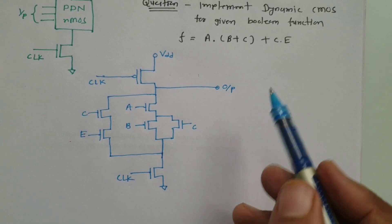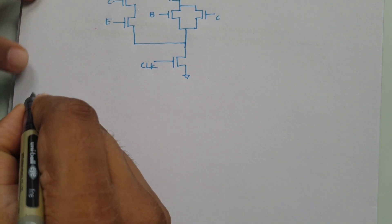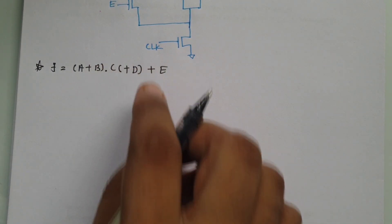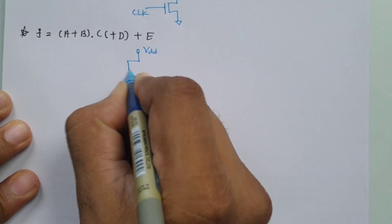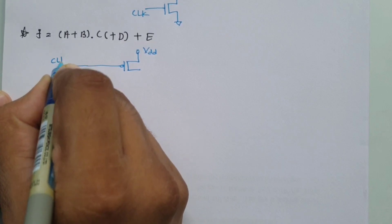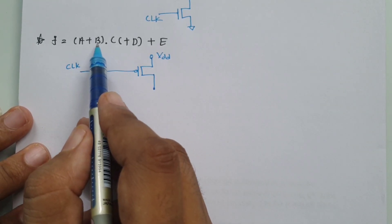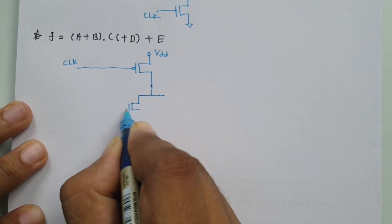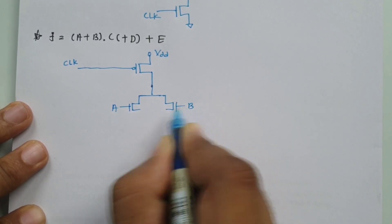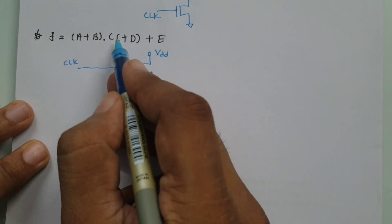Let us have one more question to further strengthen understanding. As per the basic structure, first we have VDD supply, then we connect the gated clock PMOS, and then we have the pull-down network. In the pull-down network, we have NMOS. For 'a + b', the plus operation means NMOS in parallel, so 'a' and 'b' are in parallel. Then there is a dot operation — meaning series connection. Then c + d: 'c' and 'd' should be in parallel.